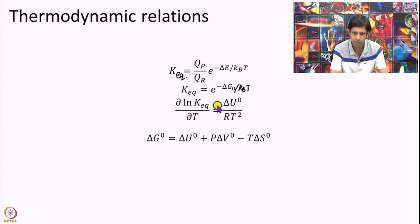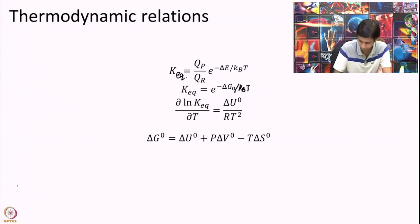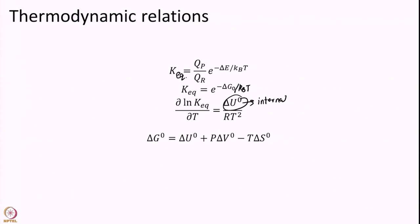So, if I just take derivative of ln K equilibrium with temperature, I will get delta U naught over RT square, where delta U naught is your internal energy. And finally, you perhaps already know the definition of delta G itself. It is delta U naught, the internal energy, plus pressure into delta V minus T into delta S. So, these relations I will be needing today.